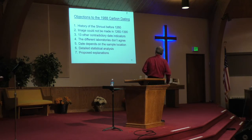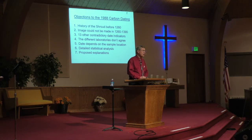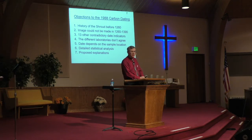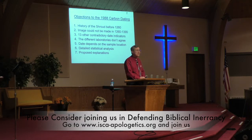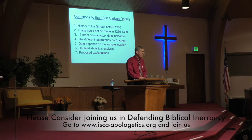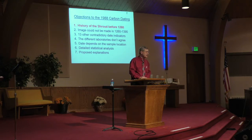Let's go into objections to the 1988 carbon dating. We have historical evidence the Shroud existed long before 1260 AD. The image could not have been made in the range of 1260 to 1390 — they didn't have the technology to do it, and we don't have the technology to do it today. There are 13 other contradictory date indicators. The different laboratories don't agree with each other. The date depends on the sample location. Detailed statistical analysis shows that the constant value of 1260 has a very low probability of being true. And there are many different proposed explanations for the carbon dating.